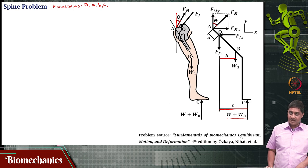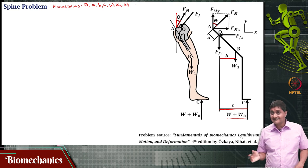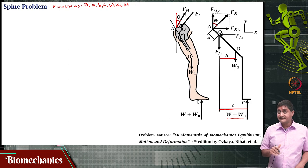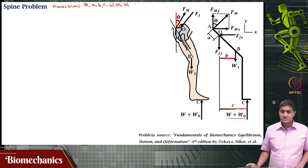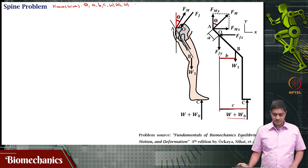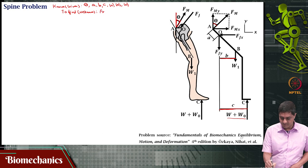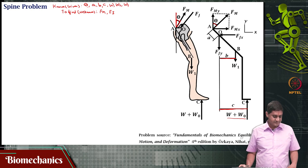So theta, a, b, c are known; W is the weight of the person, W naught is the external weight the person is carrying, and W1 is the weight of the leg and the pelvis. The total weight of the person along with the external weight is W plus W naught. I am interested in finding an expression for Fm and Fj in terms of all these quantities.